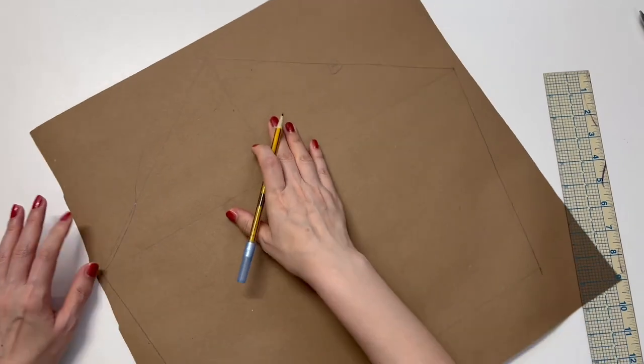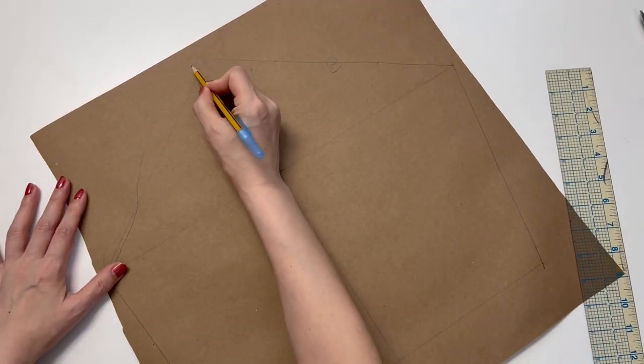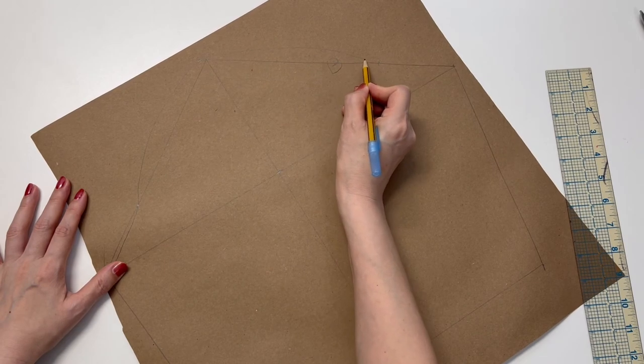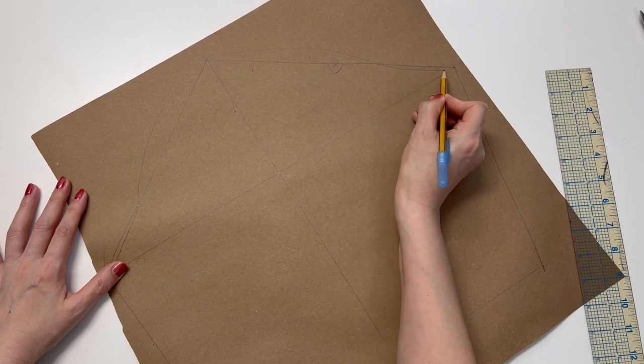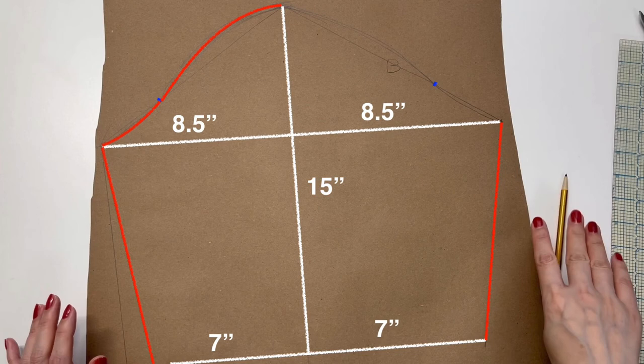When drawing the armhole of the back, draw the curve above the triangle before the mark and under the triangle after the mark.